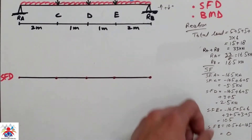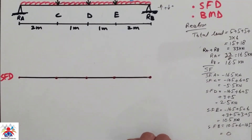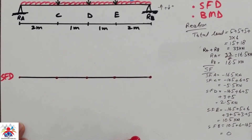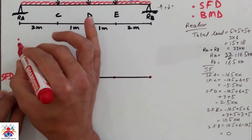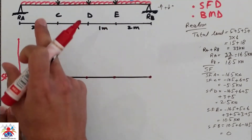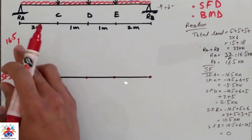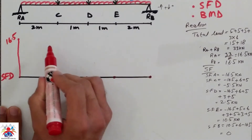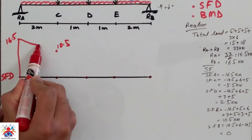Now based on these numbers we will draw our shear force diagram. Pay attention because it is not easy to draw. Shear force at point A is 16.5, so we go upwards 16.5. Then coming to point C, we have UDL contributing 6 kN, so 16.5 minus 6 leaves 10.5, and the line between these points is a diagonal line.